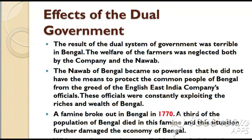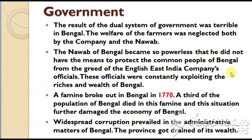By promoting the dual system of government, the English East India Company became the absolute rulers in Bengal. The result of the dual system of government was terrible. The welfare of the farmers was neglected both by the company and the Nawab. The Nawab of Bengal became so powerless that he did not have the means to protect the common people from the greed of the English East India Company's officials, who were constantly exploiting the riches and wealth of Bengal. A famine broke out in Bengal in the year 1770, and a third of the population died, further damaging the economy.